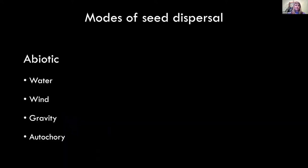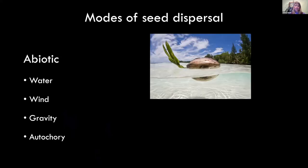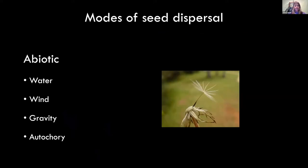When it comes to seed dispersal, there are two main modes: abiotic and biotic dispersal. Abiotic dispersal is dispersal by water, like large coconut seeds that float along the coast, or wind, like dandelion seeds. We also have gravity and autochory, which is plants that eject their seeds.